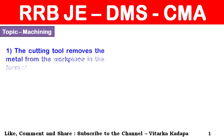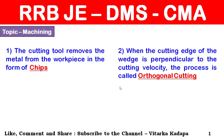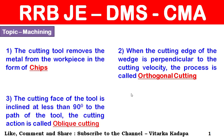The first question: the cutting tool removes the metal from the workpiece in the form of chips. When the cutting edge of the wedge is perpendicular to the cutting velocity, the process is called orthogonal cutting. When the cutting face of the tool is inclined at less than 90 degrees, the cutting action is called oblique cutting.